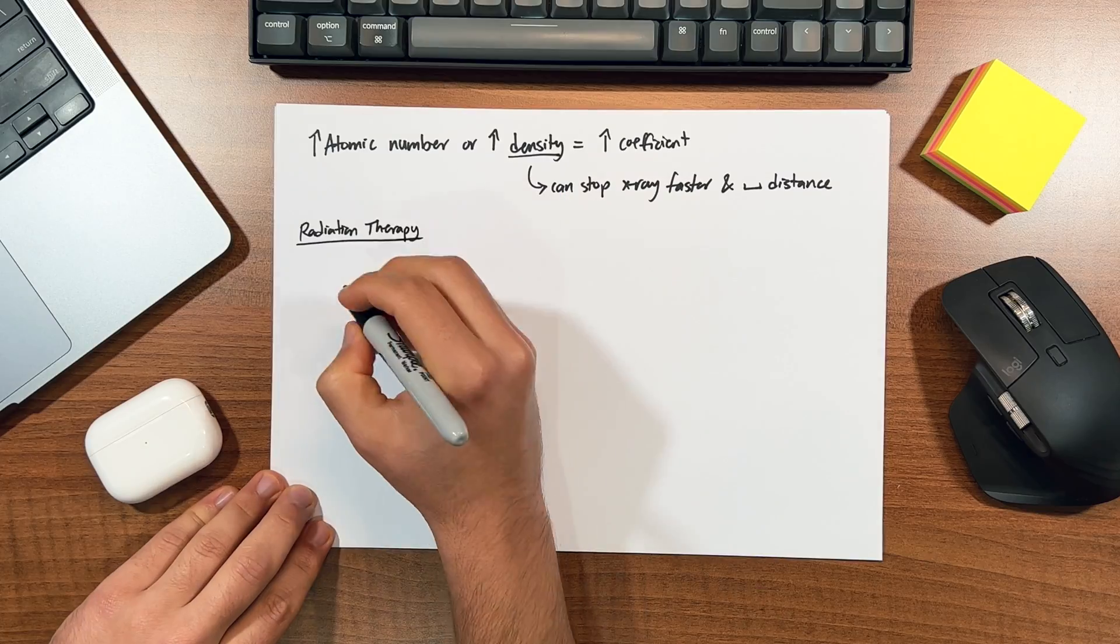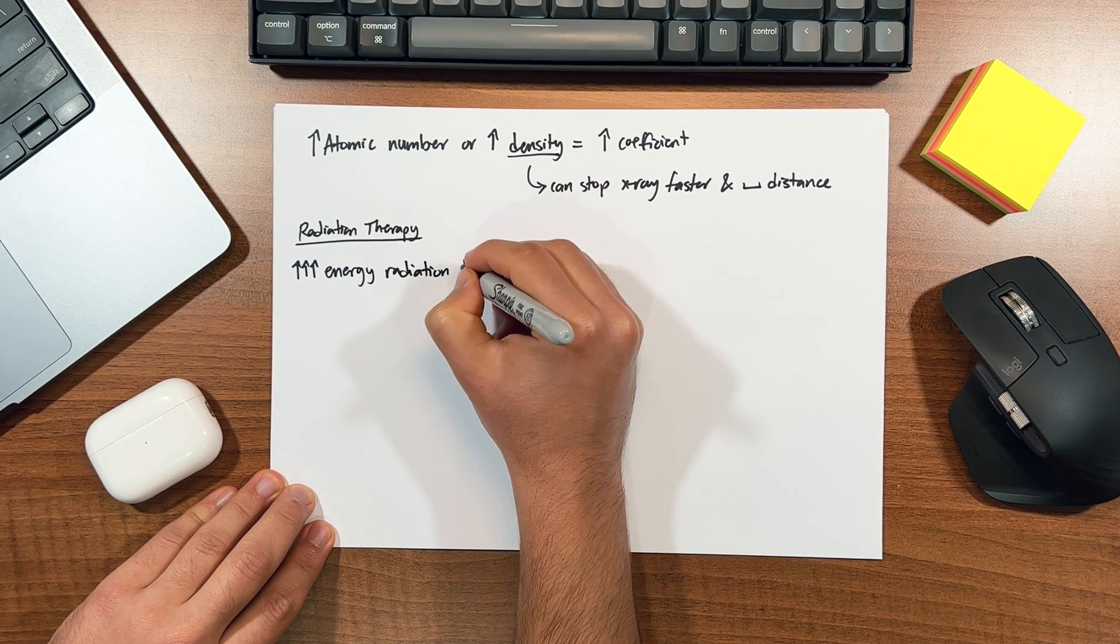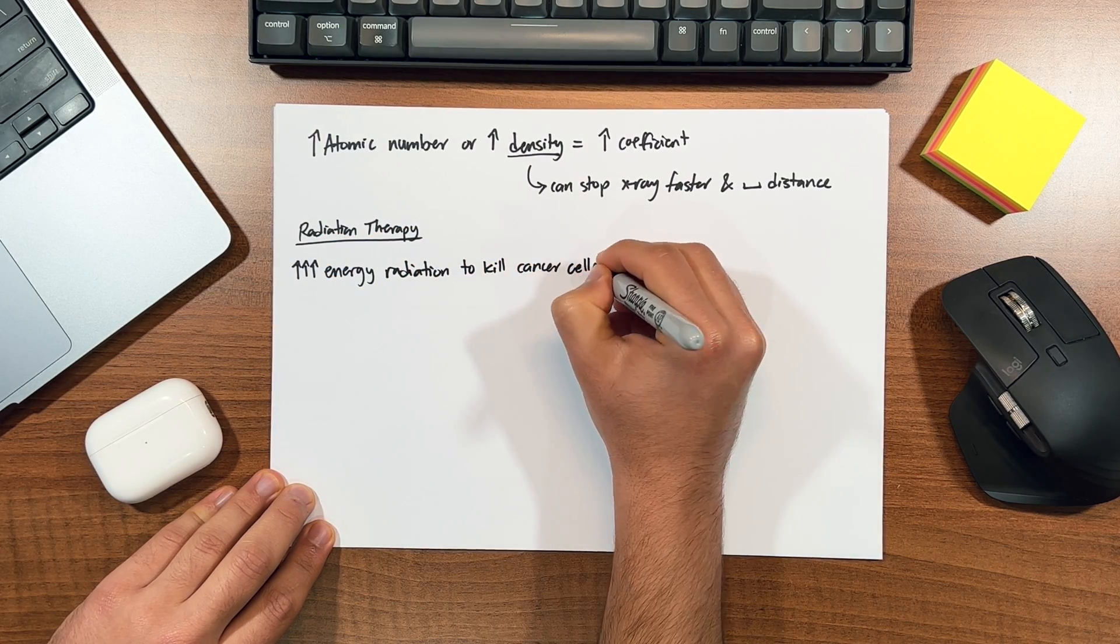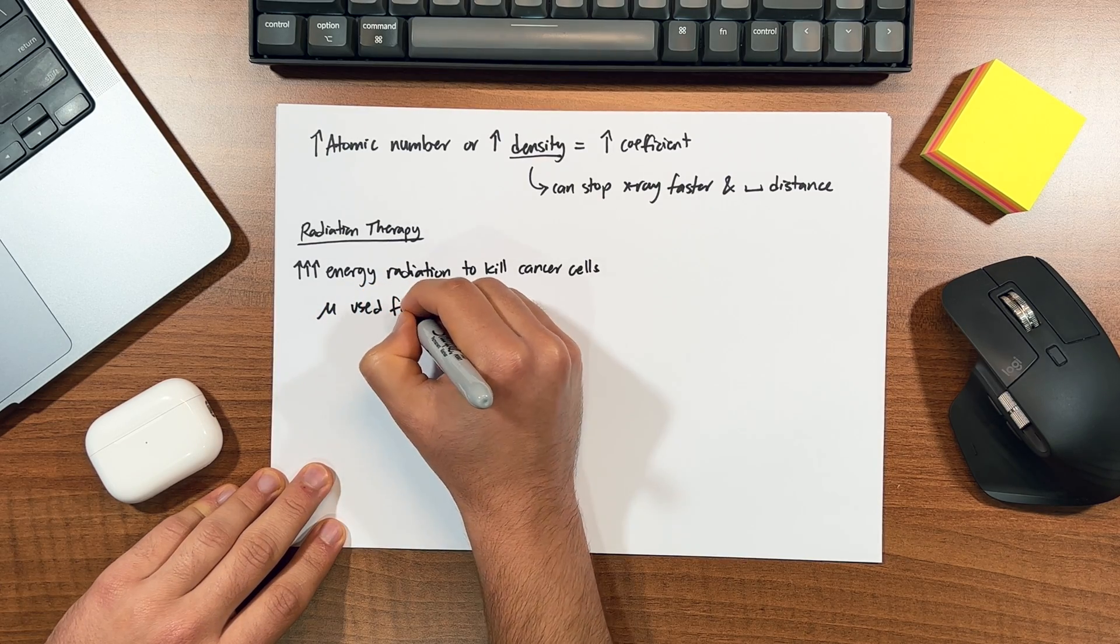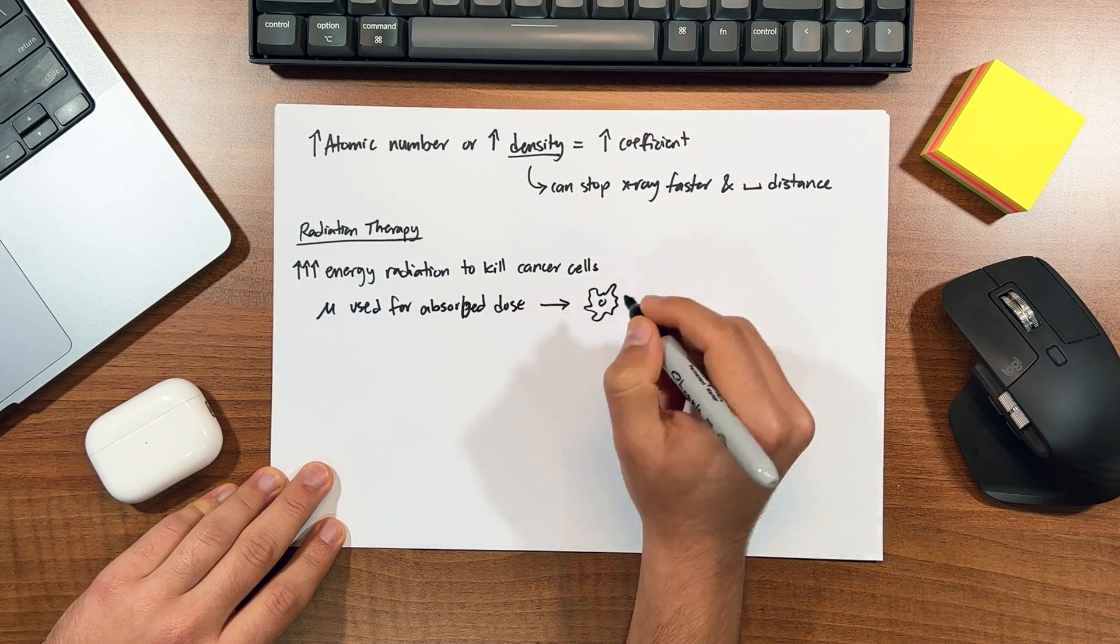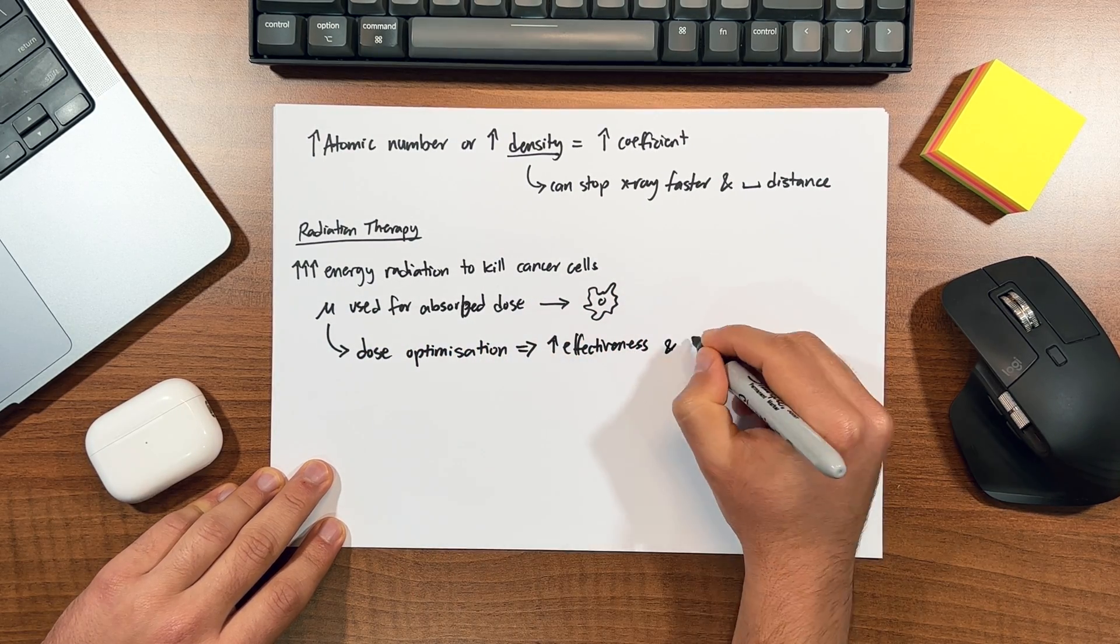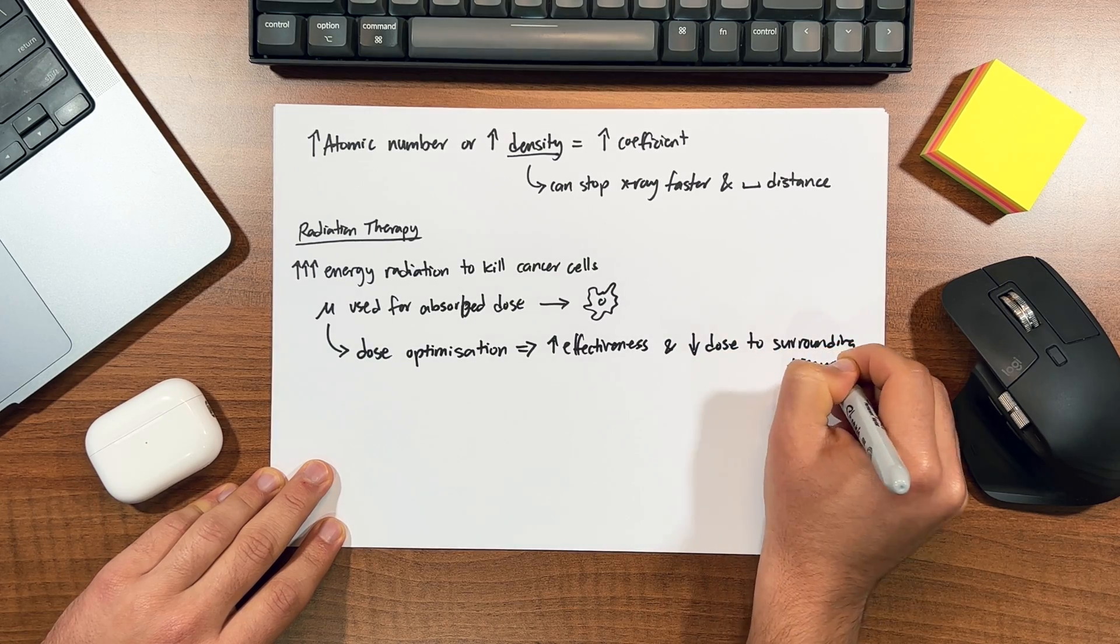An important application of attenuation coefficient is in radiation therapy. In radiation therapy, high energy radiation is used to kill cancer cells. The attenuation coefficient is used to calculate the amount of radiation that is absorbed by the tumor and surrounding tissues, which is used to determine the optimal dose of radiation delivered to the tumor. By optimizing the dosage of radiation, the therapy can be made more effective whilst minimizing the damage to the surrounding healthy tissues.